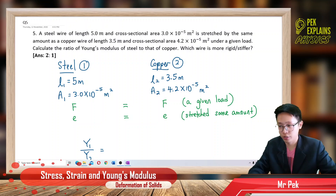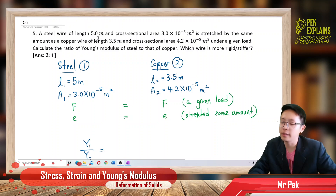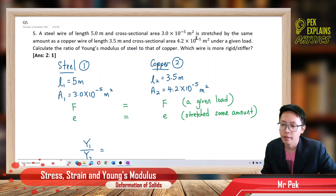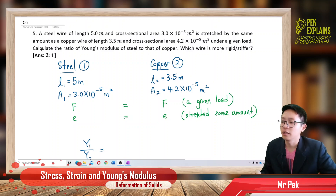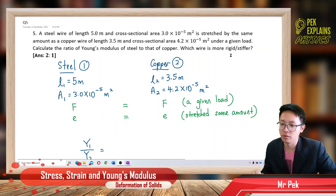Okay, now the fifth question. A steel wire of length 5 meters and cross-section area 3×10⁻⁵ m² is stretched by the same amount as a copper wire of length 3.5 meters and cross-section area 4.2×10⁻⁵ m² under a given load. Calculate the ratio of Young's modulus of steel to that of copper. Which wire is more rigid or stiffer?